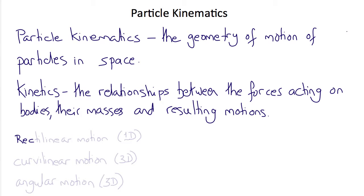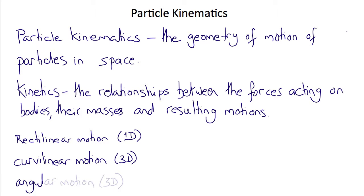We'll consider three types of motion: rectilinear motion, which means motions in a straight line or essentially one-dimensional motions; curvilinear motion, which means motions in three-dimensional space; and angular motion, which are also curvilinear motions in three-dimensional space but represented by radii and angles.